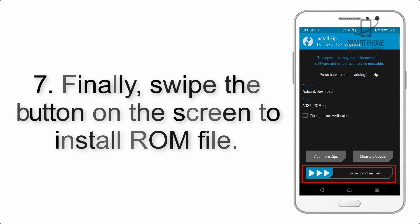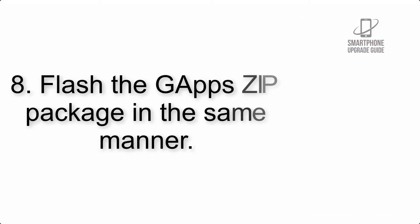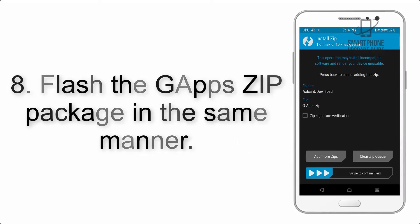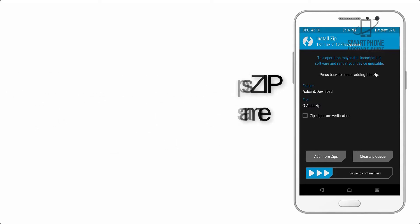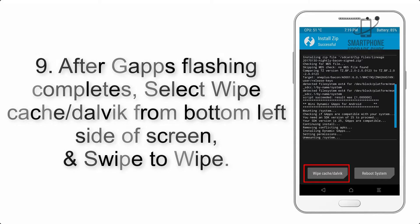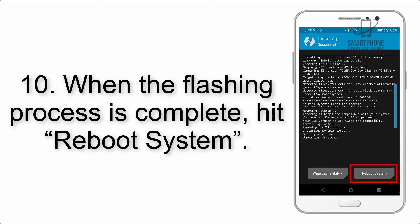Step 7: Finally, swipe the button on the screen to install the ROM file. Step 8: Flash the GApps zip package in the same manner. Step 9: After GApps flashing completes, select Wipe Cache and Dalvik from the bottom left side of the screen and swipe to wipe.